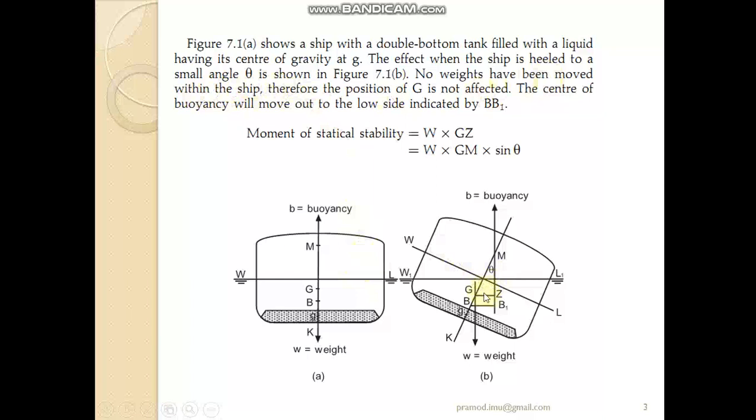The vessel has heeled to starboard side to an angle theta. No weights have been moved within the ship, therefore the position of g is not affected. G remains g even after heeling. The center of buoyancy however will change to the low side, indicated by B1, because the underwater hull has shifted.